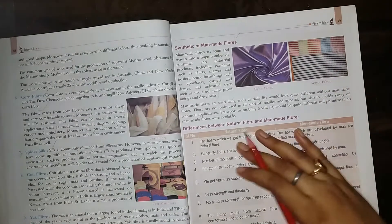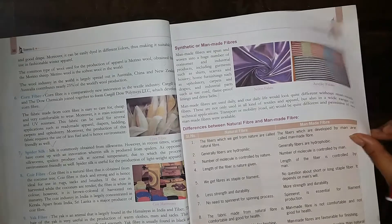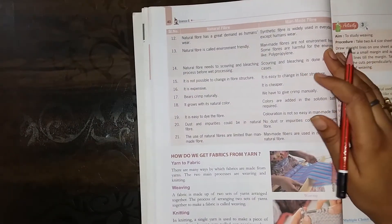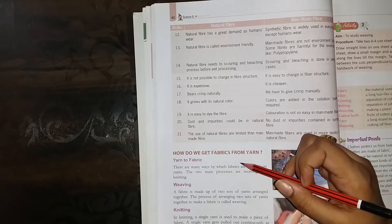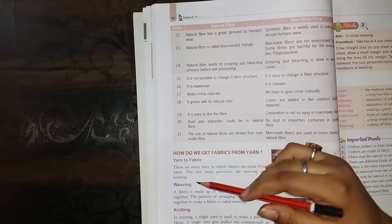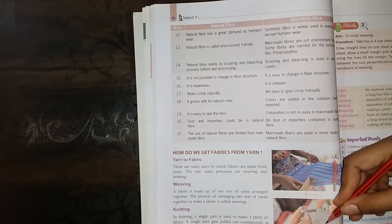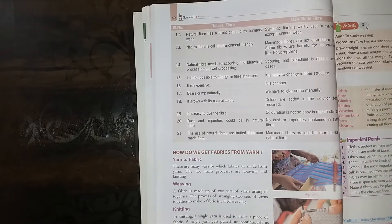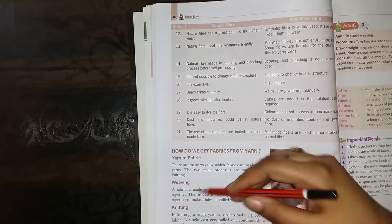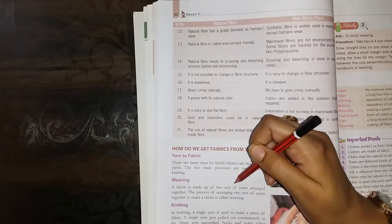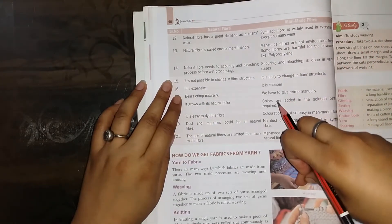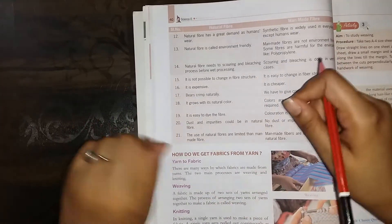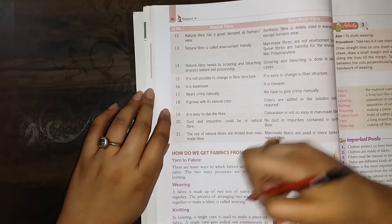Here we have a column which shows the difference between natural fiber and man-made fiber. How do we get fabric from yarn? There are many ways by which fabrics are made from yarn. The two main processes are weaving and knitting. Weaving: fabric is made up of two sets of yarn arranged together. These two sets of yarns are put together, and this process is called weaving.